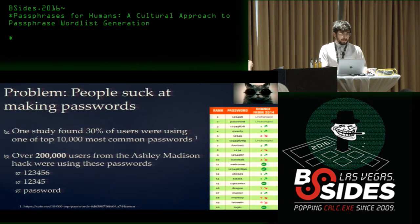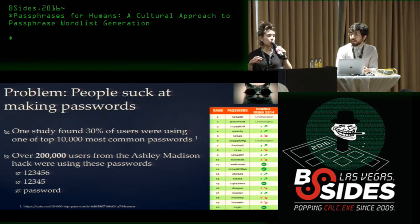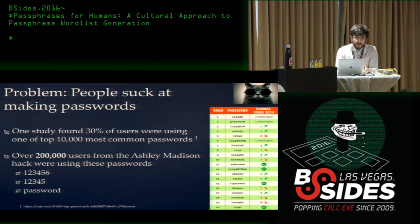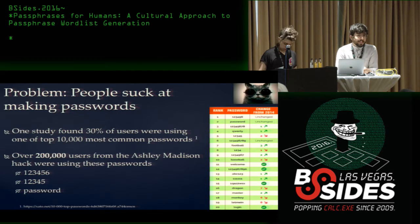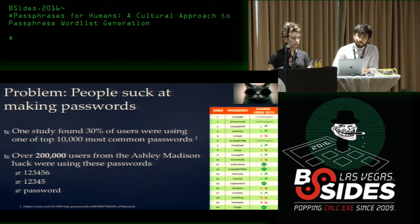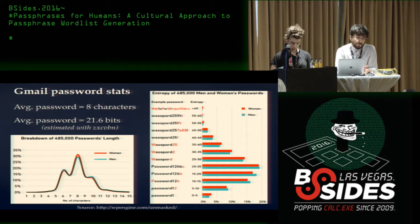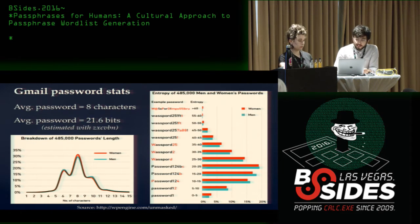Our goal is to hit 67.5 bits of entropy from our users. The problem is that most people are really terrible at making passwords. One study found 30% of users were using one of the 10,000 most common passwords. Ashley Madison — which you'd think would attract more privacy-minded users — had hundreds of thousands of people using passwords like '123456.' A data dump from Gmail in 2014 revealed that the average password strength was roughly 21.6 bits, quite far from our requirements.